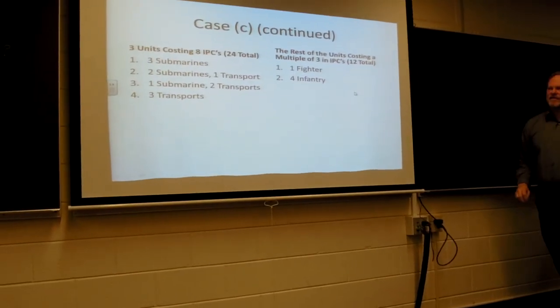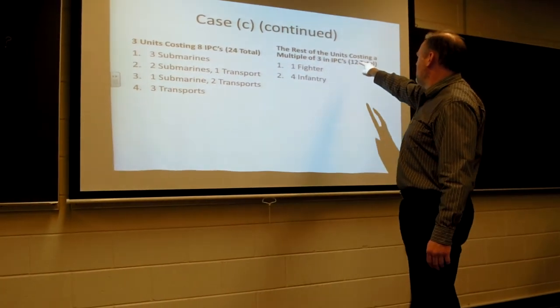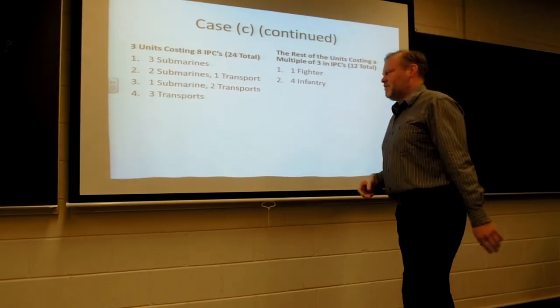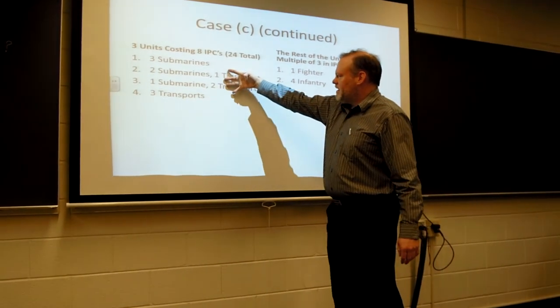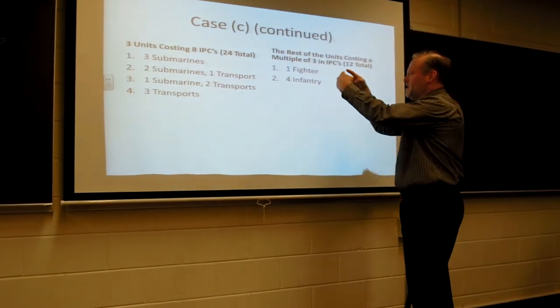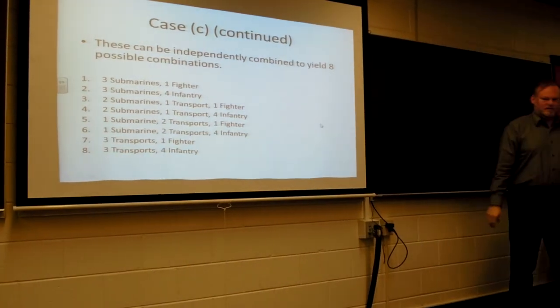The next thing that can happen is you have three units with a cost of eight, and all the rest of the 12 come from the units whose price is divisible by 3. These four can be done independently of these two. So there's eight combinations that can be paired together, and this slide shows you all eight of those possibilities.